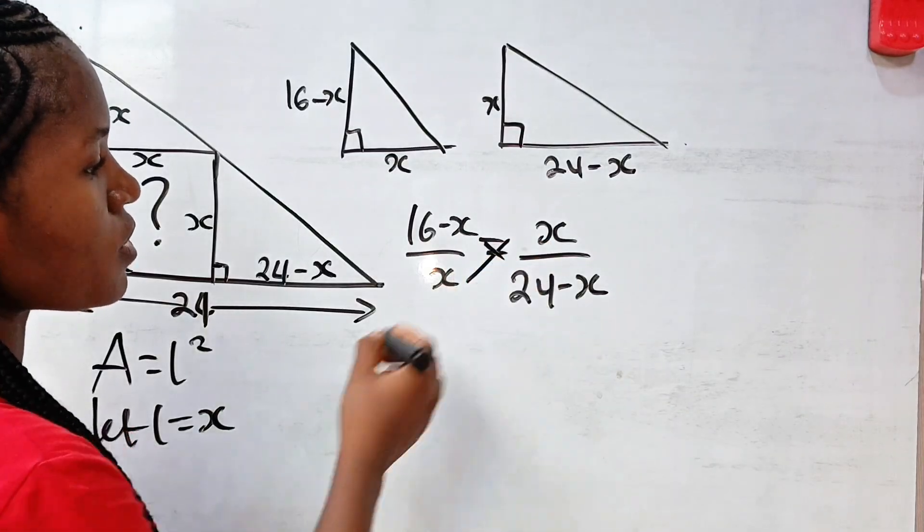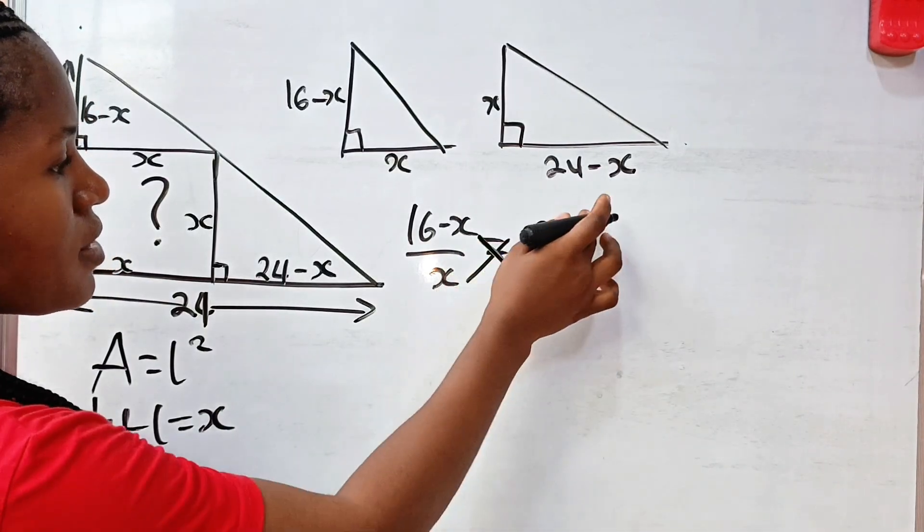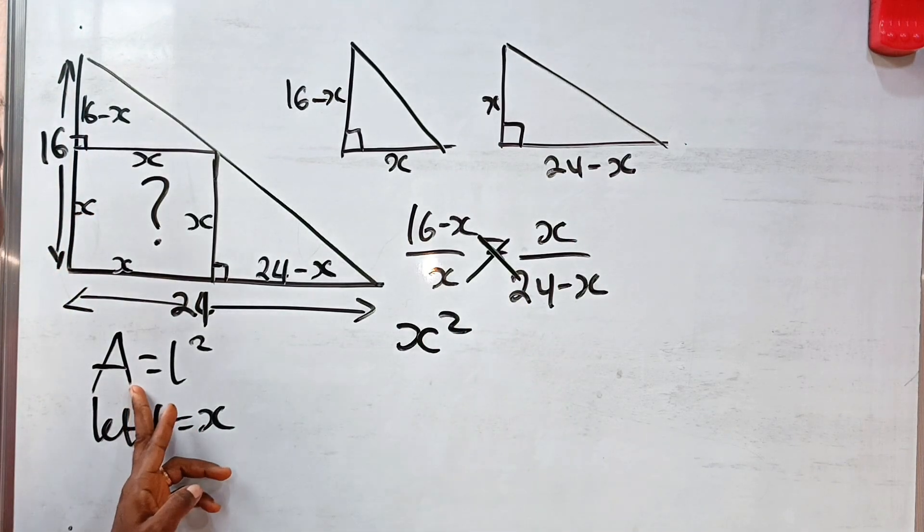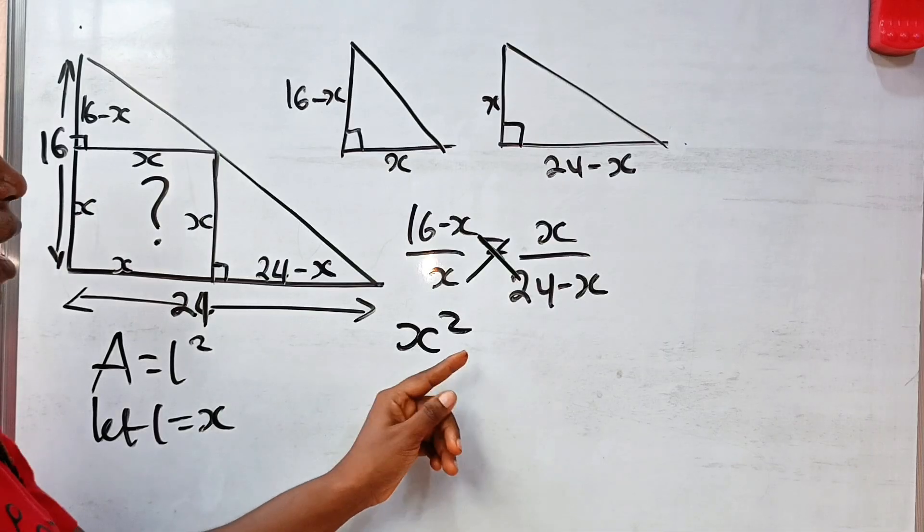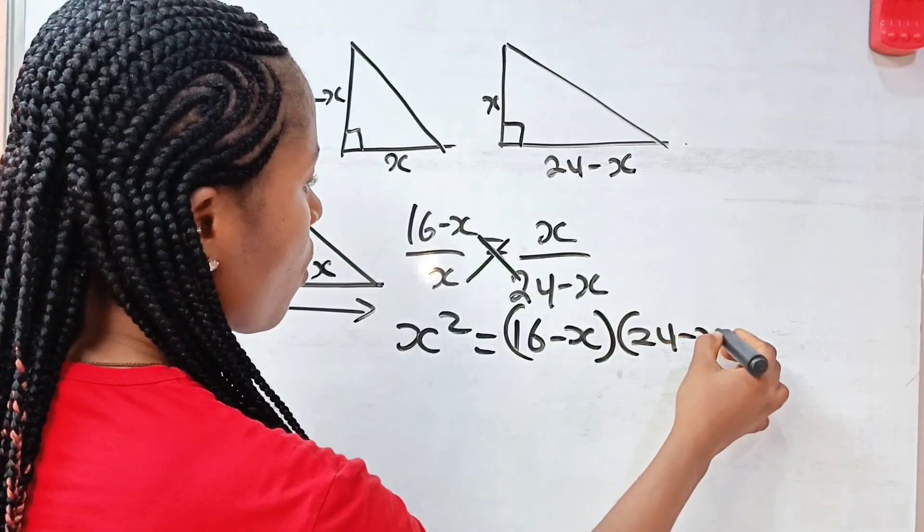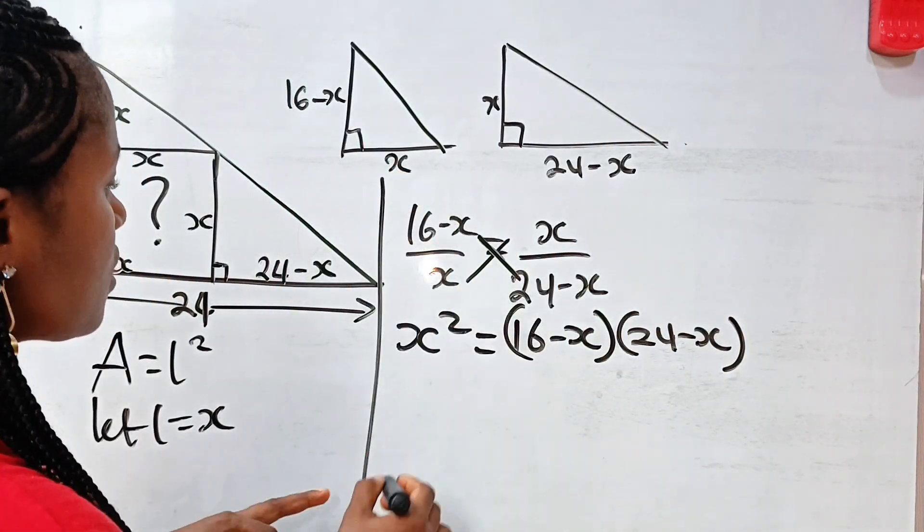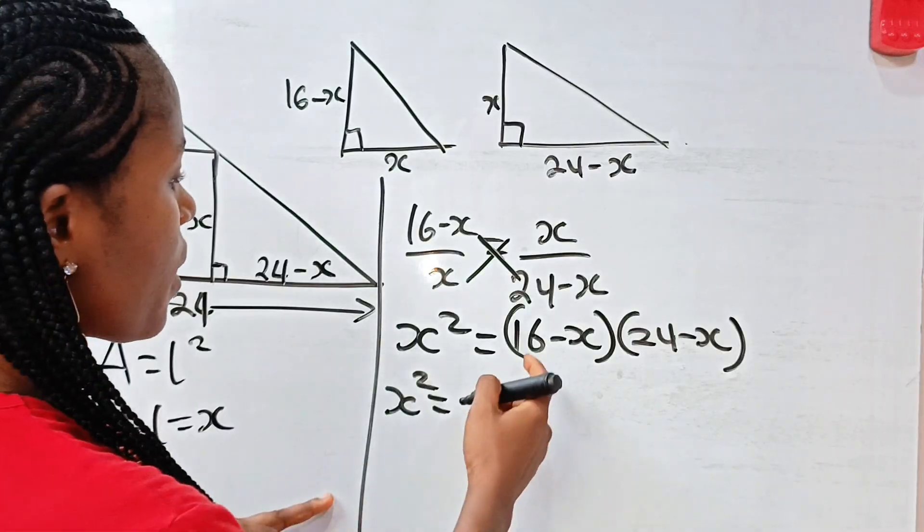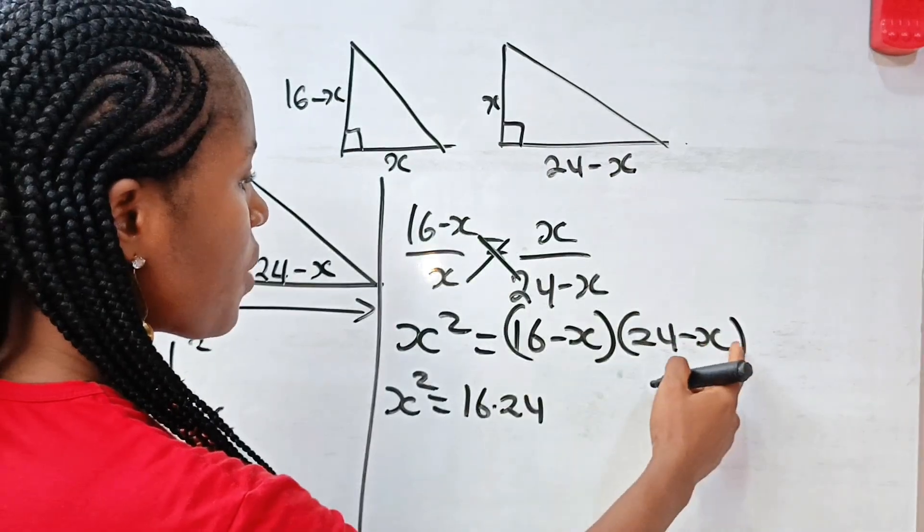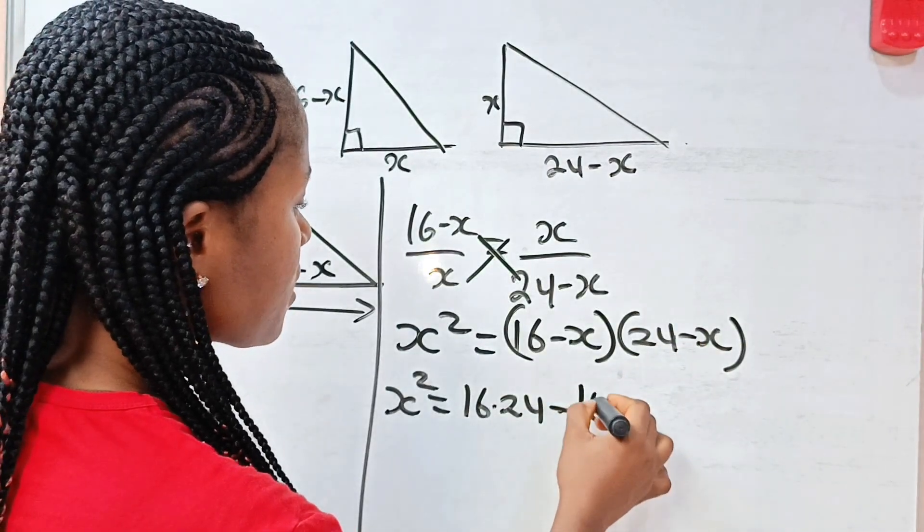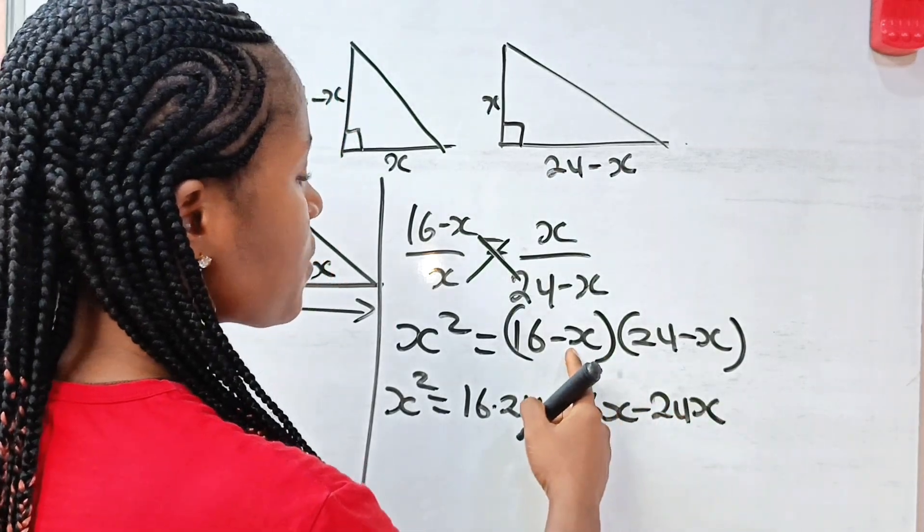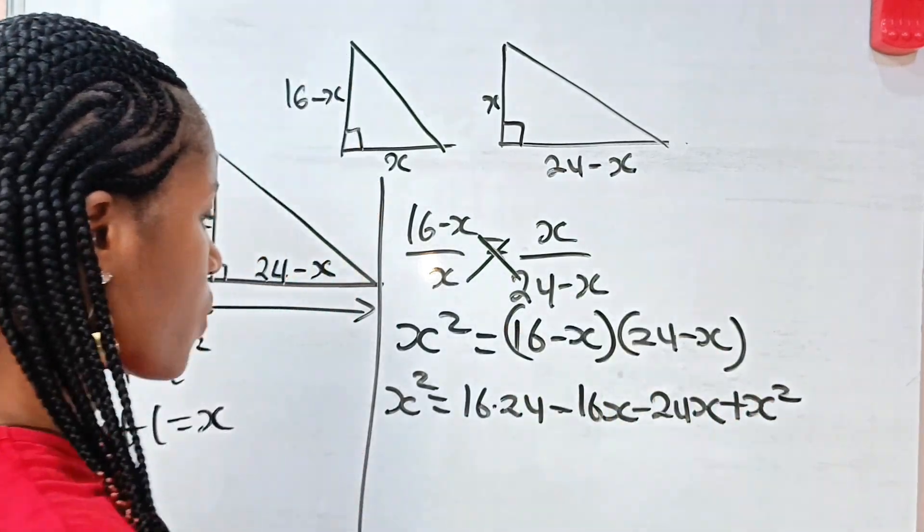Now, look at this. Let us cross-multiply. We have X times X which is X squared. Remember that we are trying to get the value of X so that we can find our area, since our length is X. Now, X squared is equal to 16 minus X multiplied by 24 minus X. If we expand this, we have X squared is equal to 16 times 24, then 16 times minus X which is minus 16X, then minus X times 24 is minus 24X, and minus X times minus X is plus X squared.